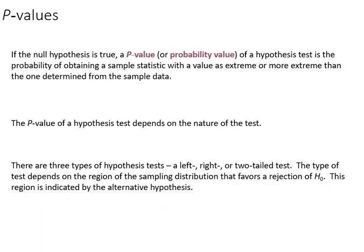So next we can talk about p values. If the null hypothesis is true, we don't want to reject it, then the p value of a hypothesis test is the probability of obtaining a sample statistic with a value as extreme or more extreme than the one determined from the sample data, which means it would fall outside of our confidence interval.